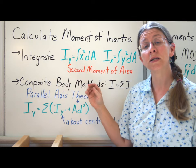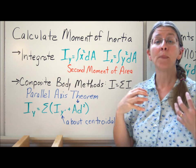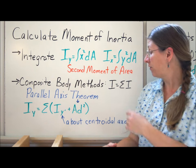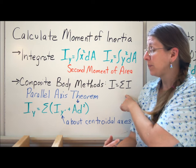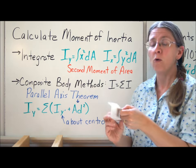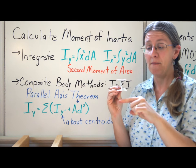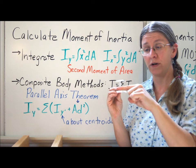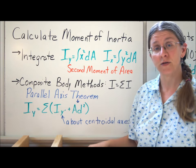The other way, of course, is to do a composite body method. Like adding up areas, adding up moments of inertia is simply a question of finding out what each one is individually and adding them all up. The trick is that just like with our I-beam, where the axis comes matters. It matters if your axis is here or here or here.